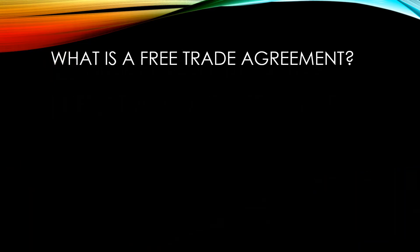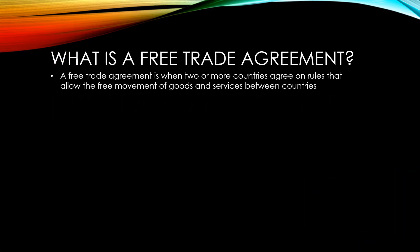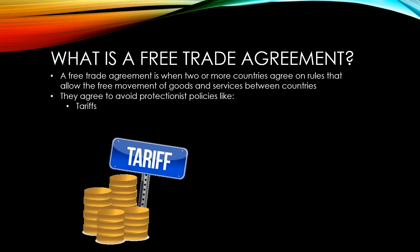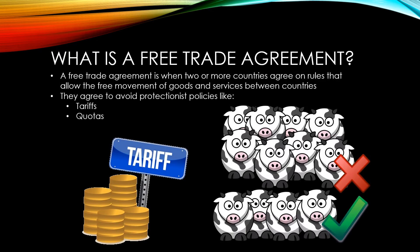A free trade agreement is when two or more countries agree on rules that allow the free movement of goods and services between those countries. This allows them to avoid protectionist policies such as tariffs and quotas. Tariffs are an additional fee that a government charges on imports. These raise the price of imports, discouraging people from purchasing them.